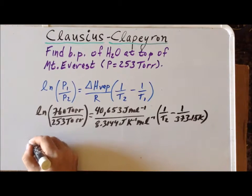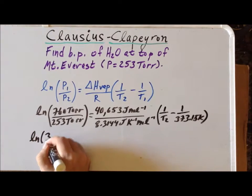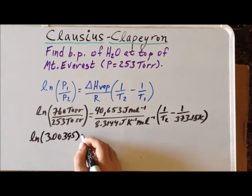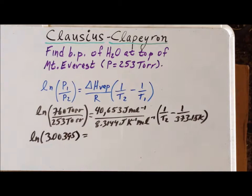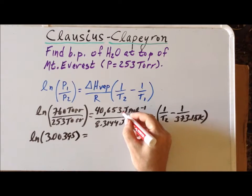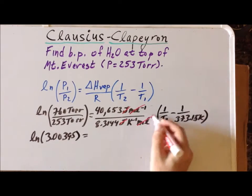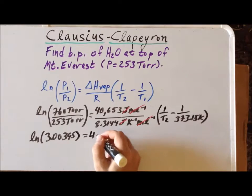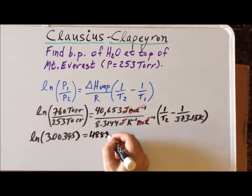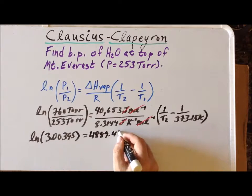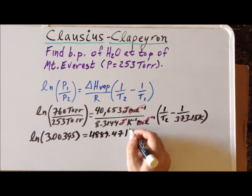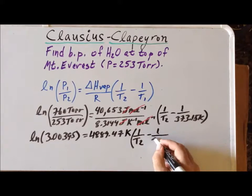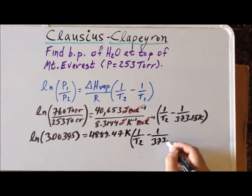Now we can simplify over here, and this becomes the log of 3.00395. On the right-hand side, notice that we can cancel units of joules and the units of inverse moles, so that gives us 4,889.47 Kelvin times (1/T₂ - 1/373.15 Kelvin).